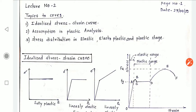Hello students, welcome to lecture number 2 of unit number 6, which is plastic analysis of structures. In the previous lecture we covered what plastic analysis is and the stress-strain curve of mild steel. Today's topics are: the idealized stress-strain curve, assumptions in plastic analysis, and stress distribution in elastic, elastoplastic, and plastic stages.